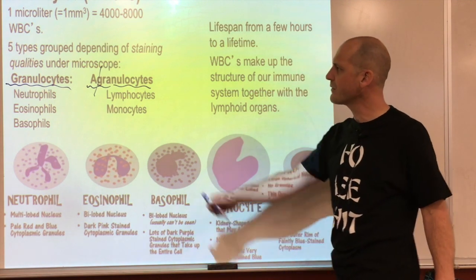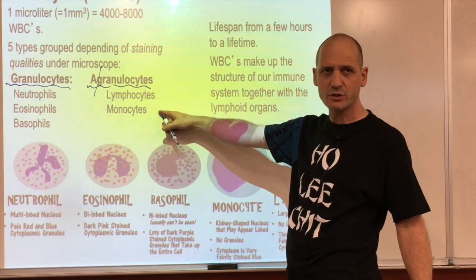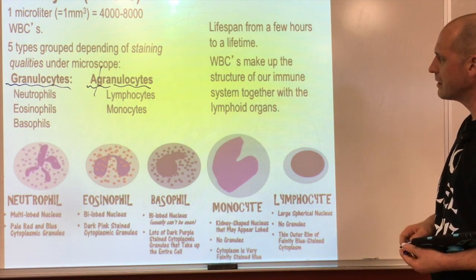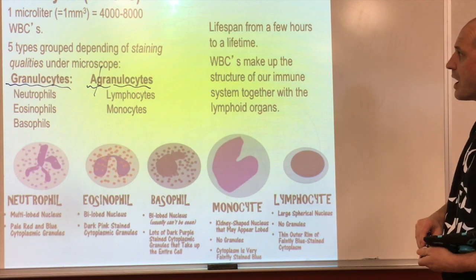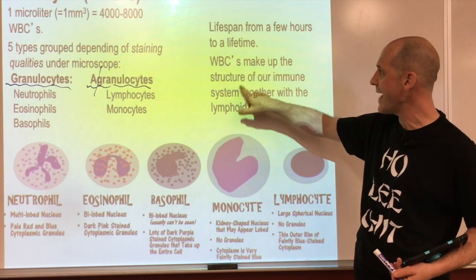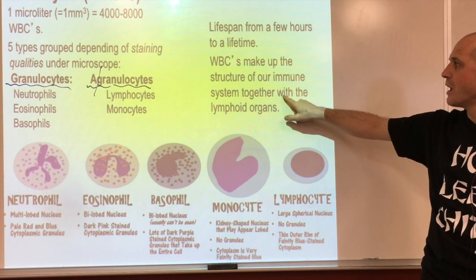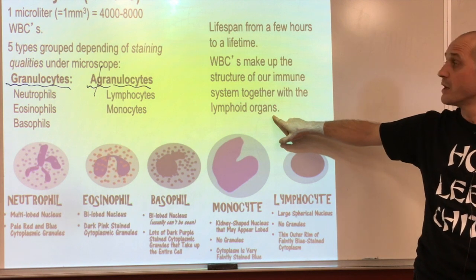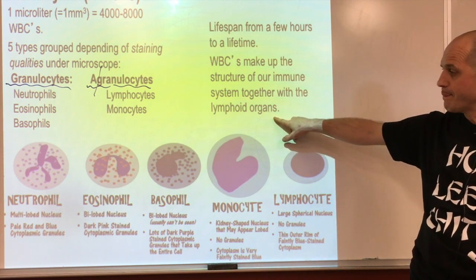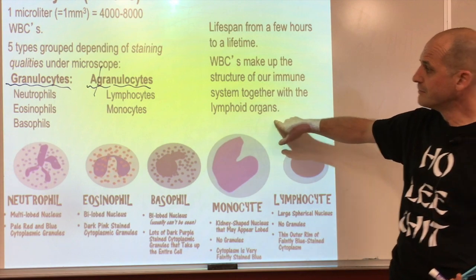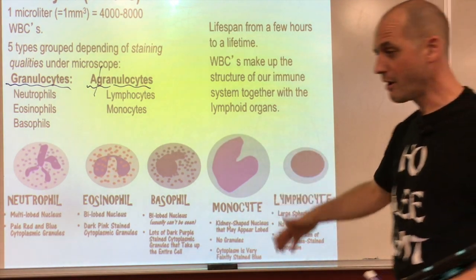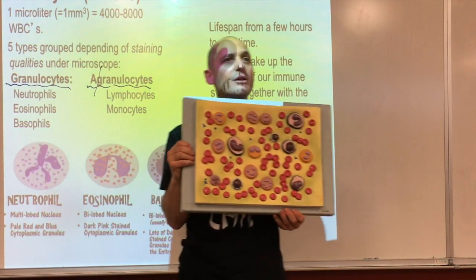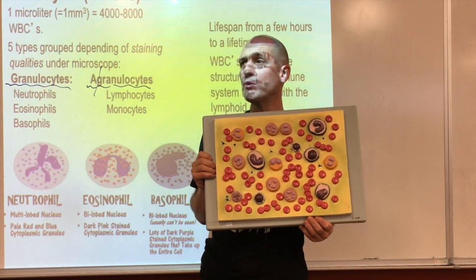Granulocytes include three types: neutrophils, eosinophils, and basophils. Agranulocytes include lymphocytes and monocytes. Their lifespan ranges from a few hours to a lifetime. White blood cells make up the structure of the immune system and together with lymphoid organs form the lymphatic system to help implement the immune response.